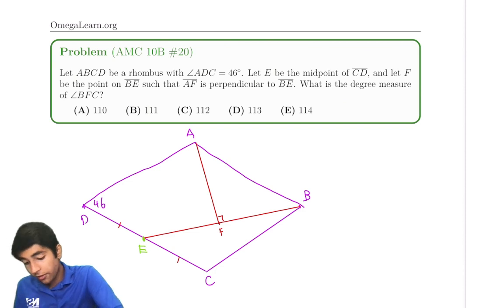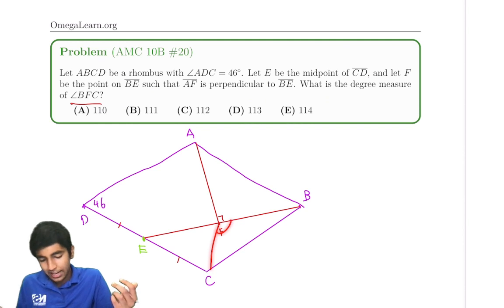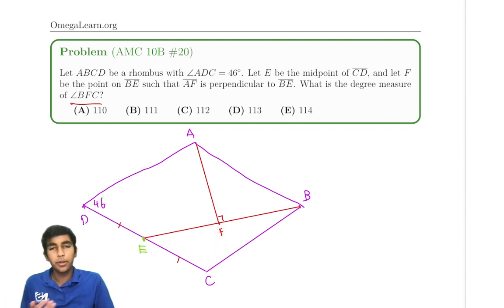What is the degree measure of angle BFC? So it's kind of this random seeming angle. What is that angle? How does it have anything to relate to our diagram?